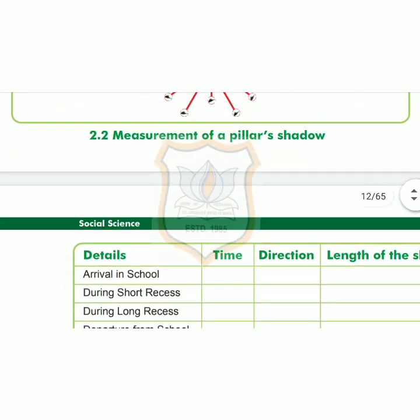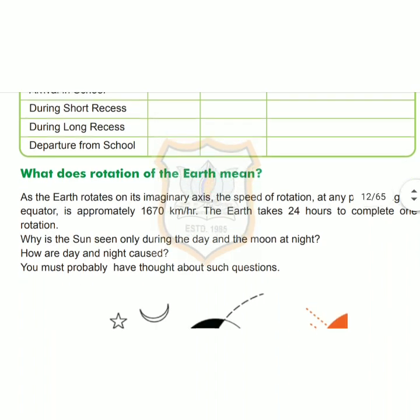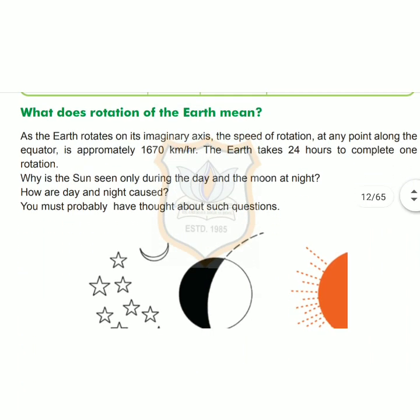Now let me explain you what rotation of the earth means. The movement of the earth on its own imaginary axis is called the rotation of the earth. Just as a top rotates on its own axis, the earth also rotates on its own imaginary axis. The imaginary axis can be considered perpendicular to the equator. The earth rotates with a speed of 1670 km per hour.